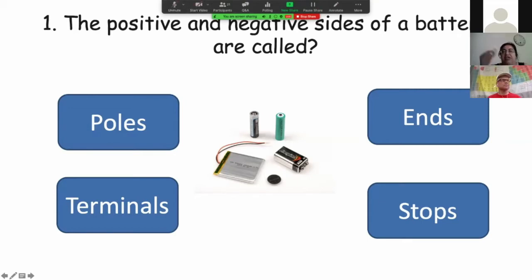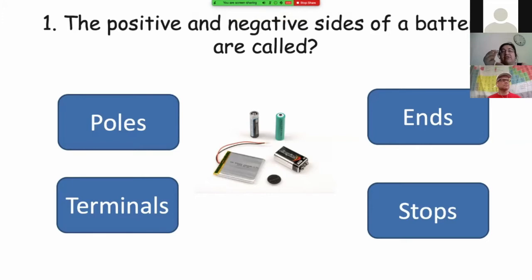We have a battery, it has two something, what are they called? Are they called poles, ends, terminals or stops? What do you think? Which one is the correct answer?